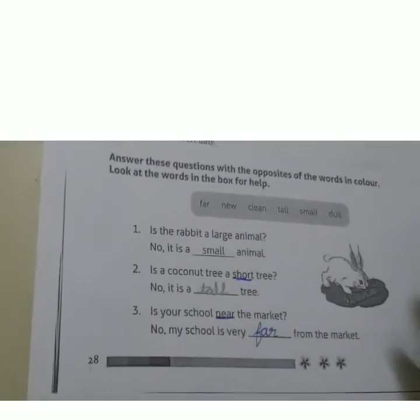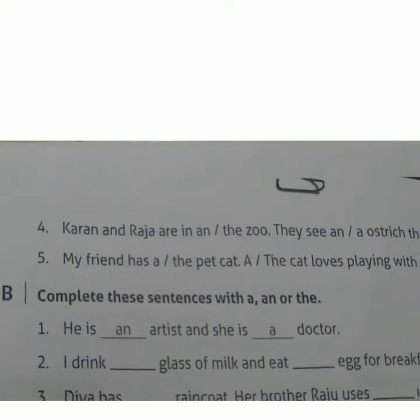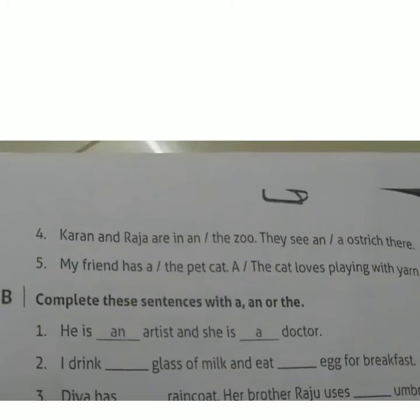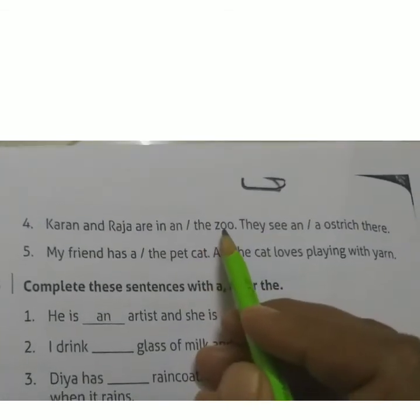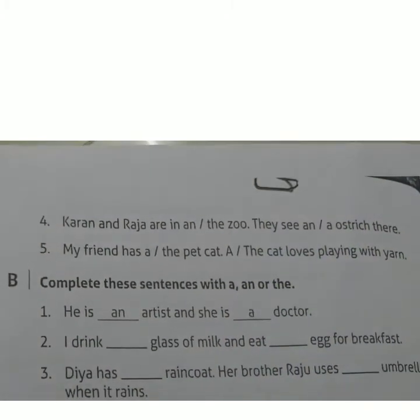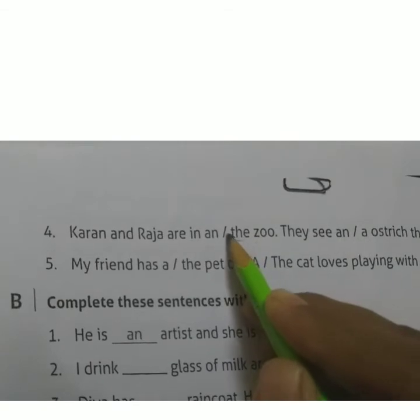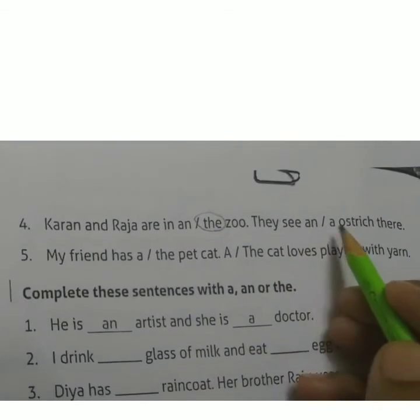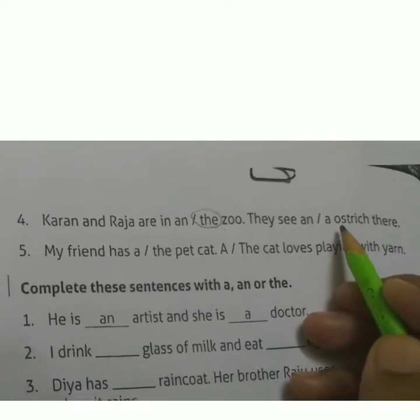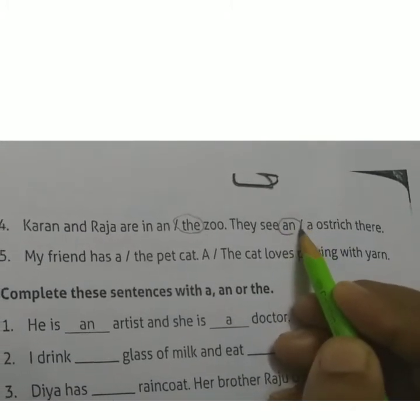Next, page number 28, the fourth exercise: 'Karan and Raja are in a/the — zoo.' Zoo is a place, so you should use THE. 'They see an/a — ostrich there.' First letter of 'ostrich' is O. O is in the vowels, so the answer is AN.